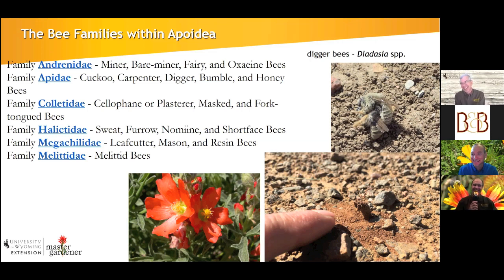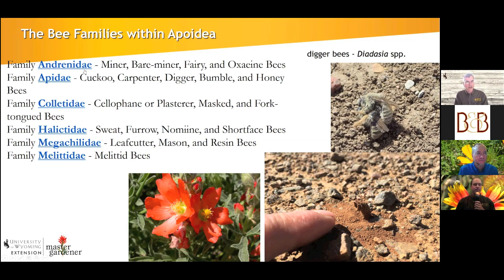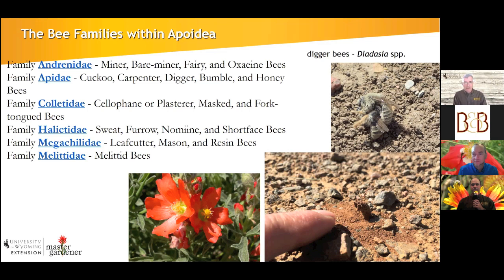It's a rough crowd here! There are multiple families within Apoidea — the superfamily — and insect families all end in -idae. You have things like the Andrenids, which include miner bees and fairy bees. It's not just honeybees. We also have to consider that honeybees originated in Europe or Eurasia, so all our native plants evolved with native bees visiting them — and honeybees can actually in some cases be a competitor for our native bees.